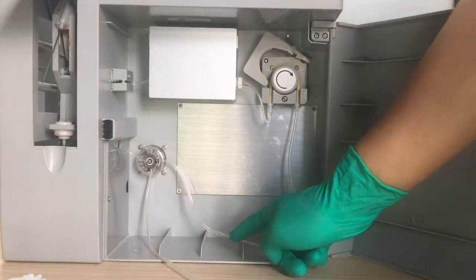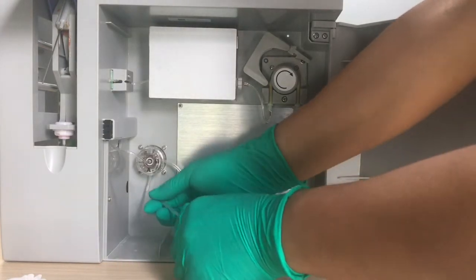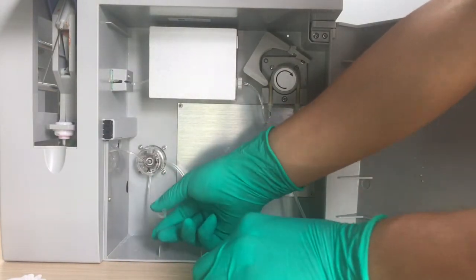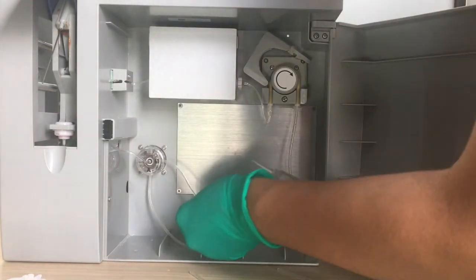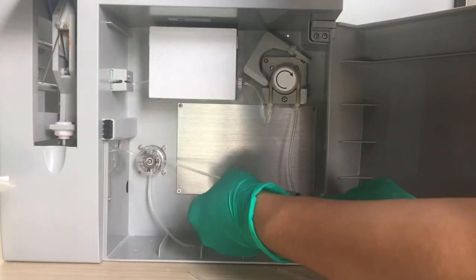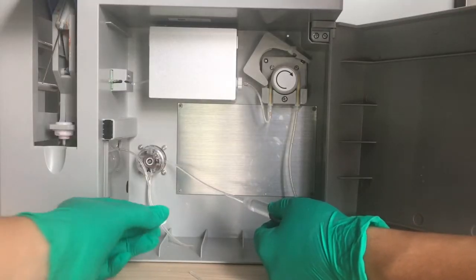Now we take off the hard tube and connect the tube with the syringe. We connect the B channel first.